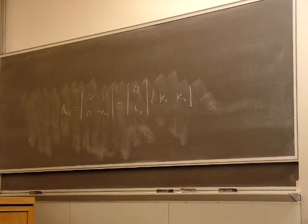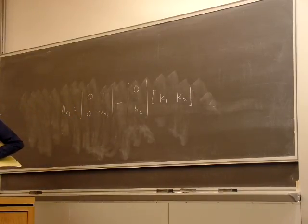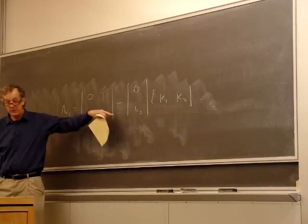That form is our original open loop A matrix. Realization is a very good spot. Zero, one's, coefficients, the characteristic equation. What do we call that one?